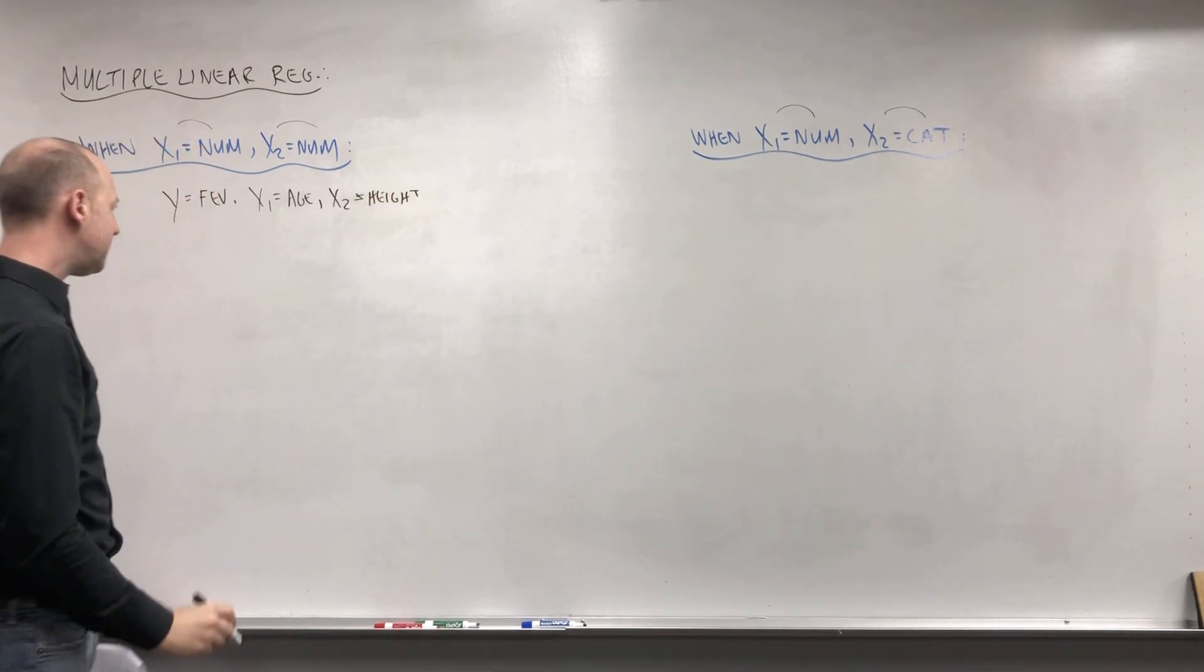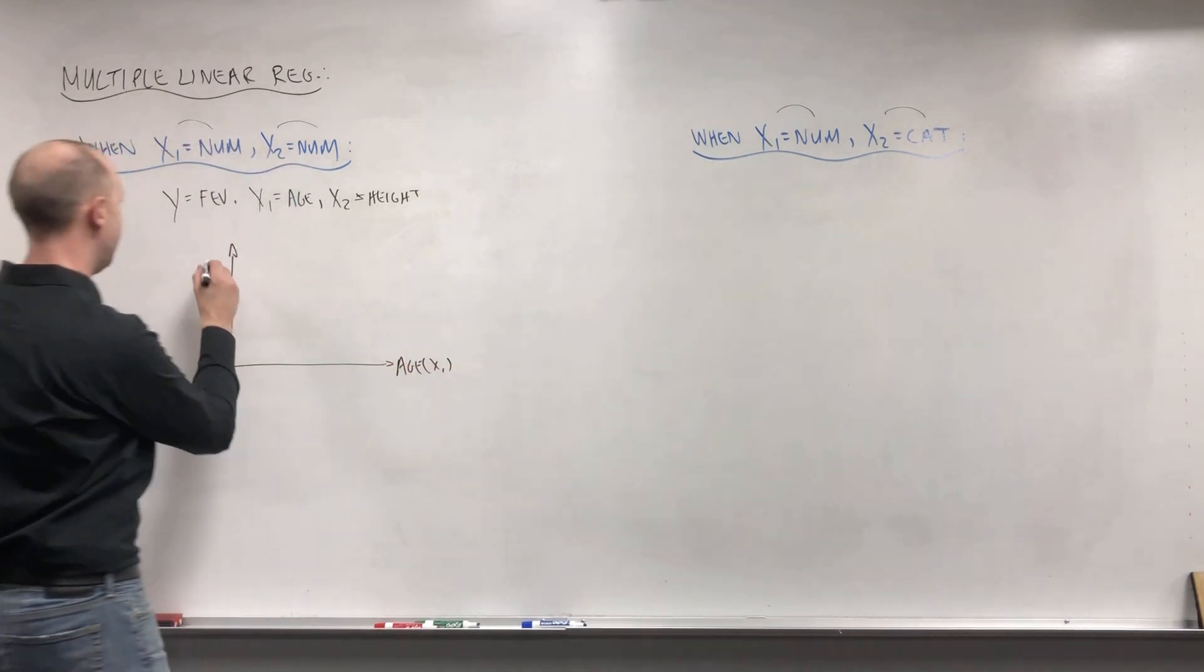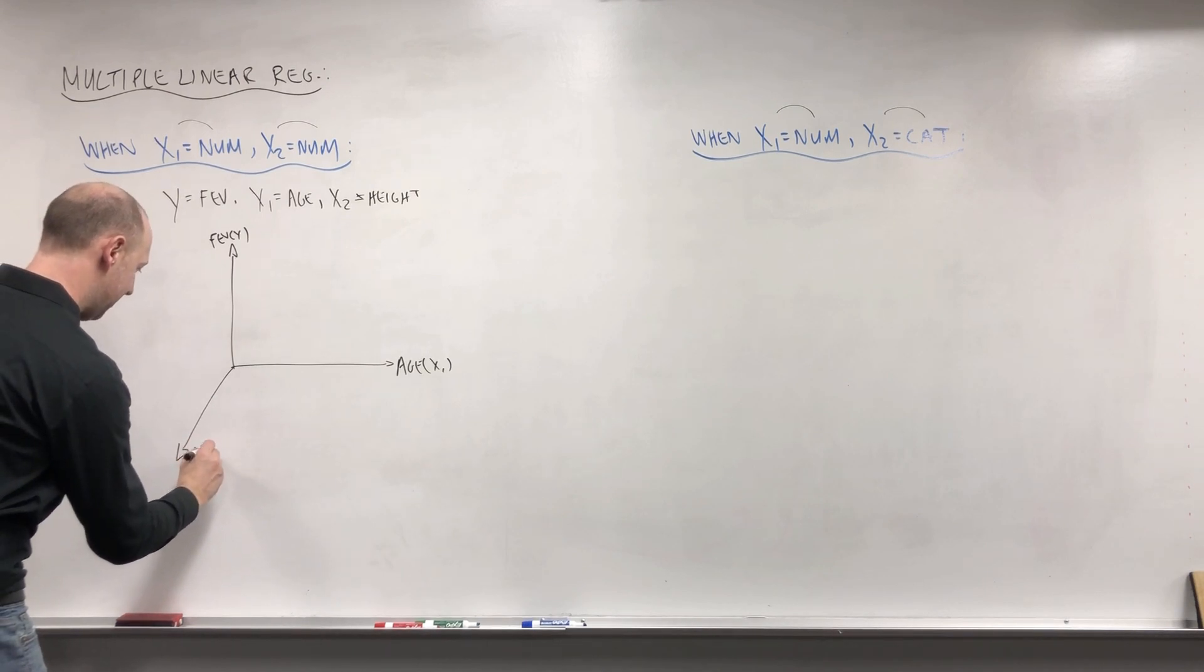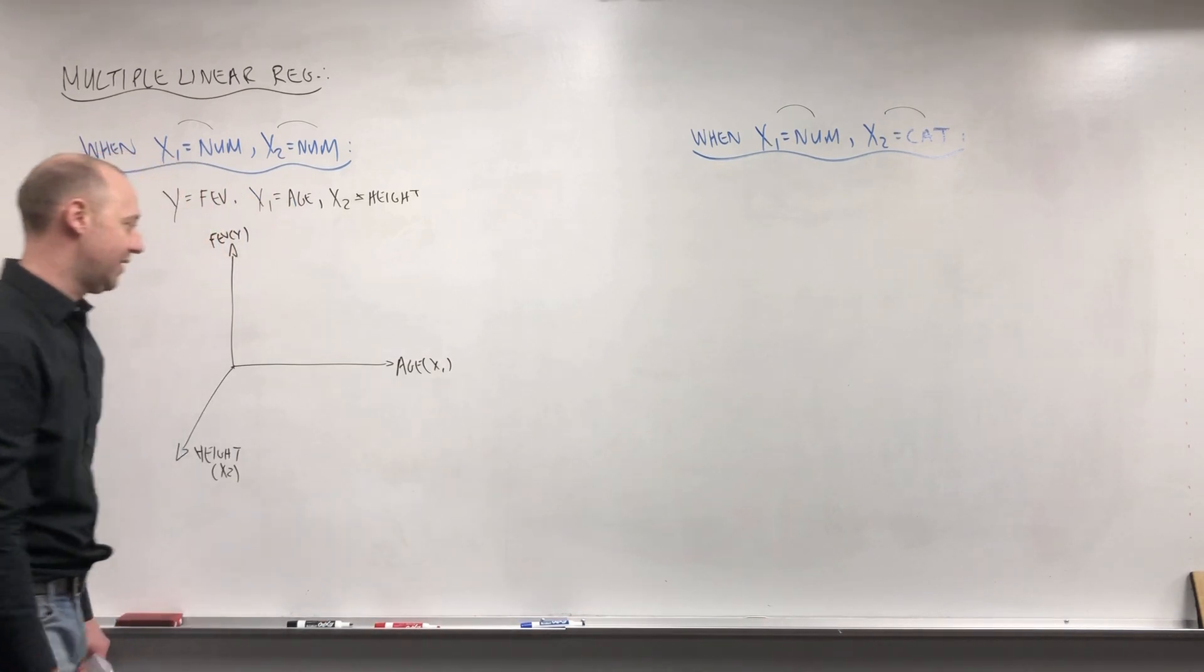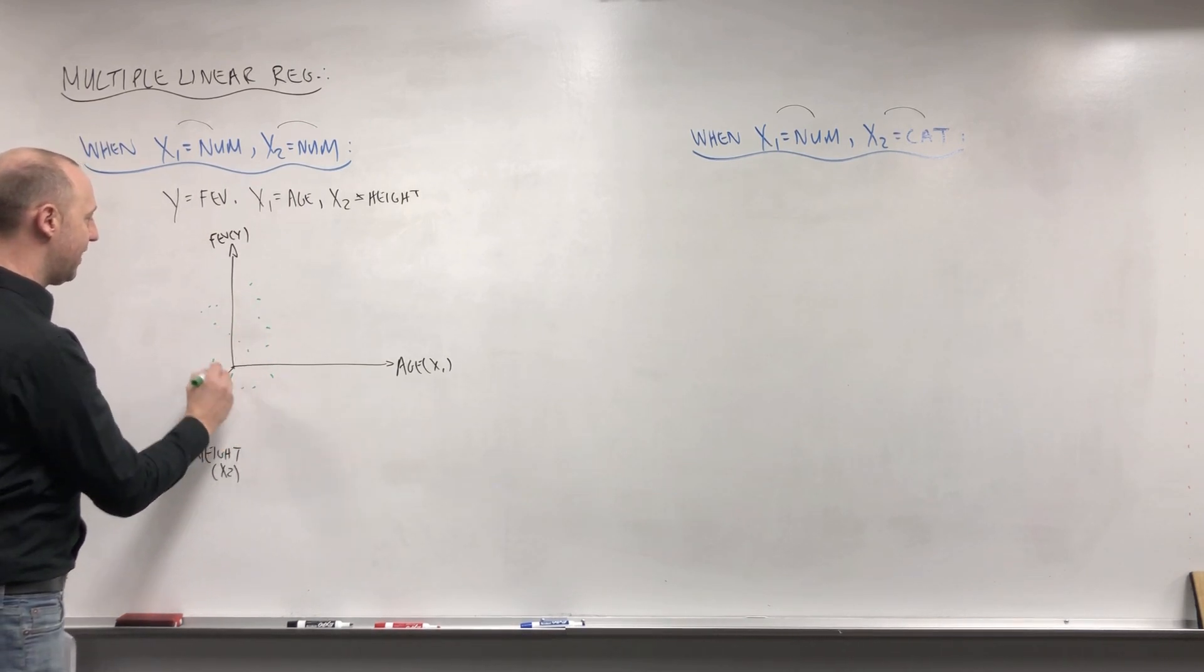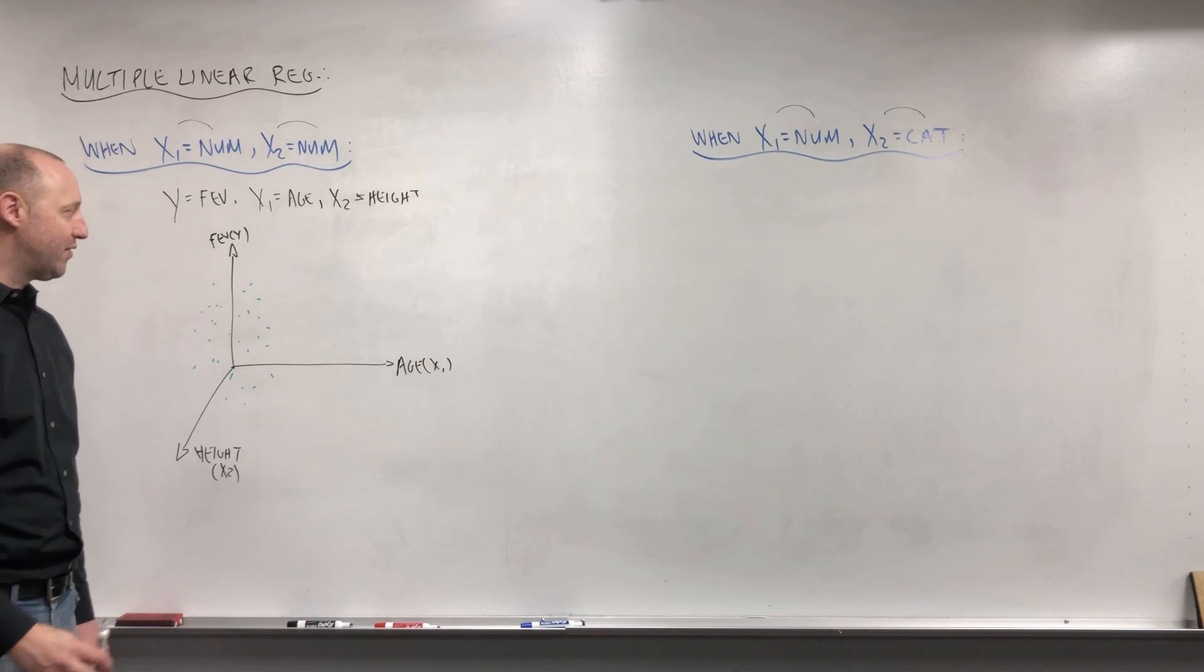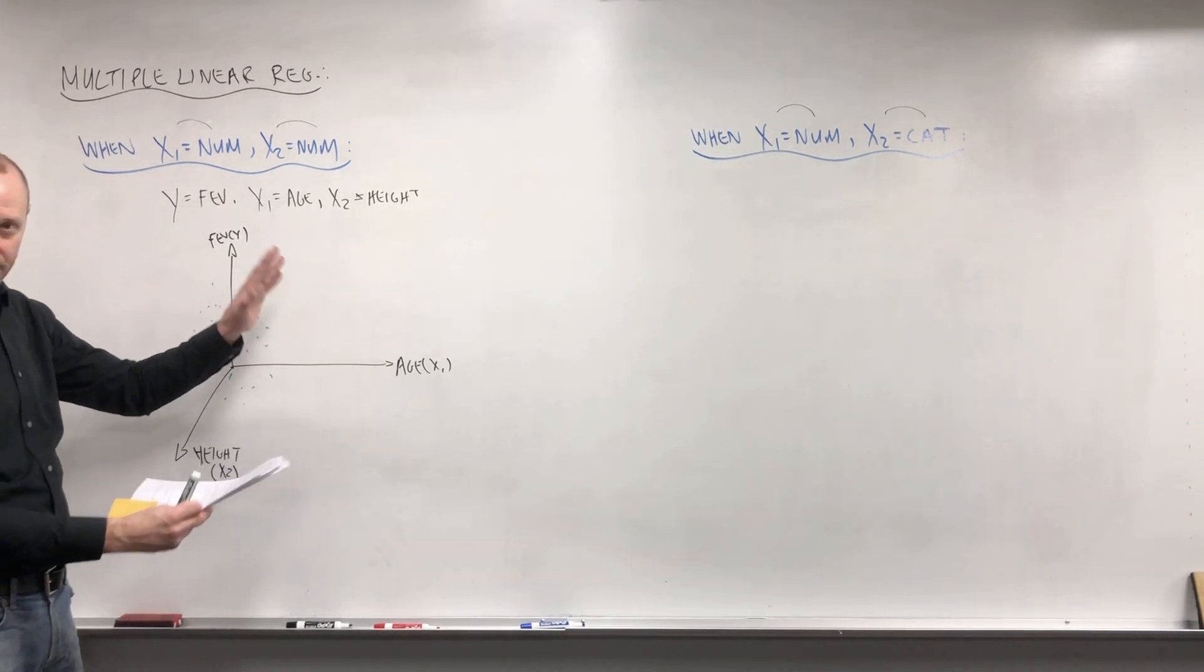So previously we're thinking of simple linear regression where we'd have age x1, here's FEV or the y variable, we'd have some scatterplot in there. Now we're adding another dimension, so here's the height x2. And what we're going to end up with when we have two numeric variables, two numeric x variables, is this three-dimensional scatterplot. It's a bit hard to visualize when it's drawn on a two-dimensional surface, but you can think of it. Well, one way that might be easier to visualize it, and in the video working with R you're going to get a bit better visualization there, but here's age, here's FEV, and now there's a third axis height coming out. And the scatterplot is in three dimensions, it's in this three-dimensional cube.